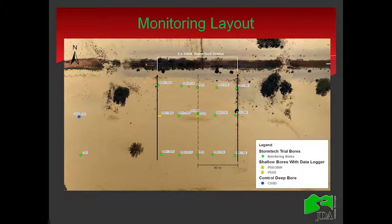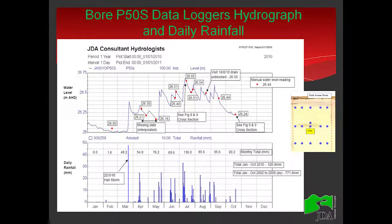I'm referring to the center line — it's important because we estimate that if the maximum mounding occurs, it will occur there. This is the observed data from the logger. My Modflow model starts in March and ends in October, because we are interested in the mounding dynamics in the wet period. In summertime, the perched water table will virtually vanish because there is no recharge — it will all drain. According to the data, we have a maximum mounding occurring in July 2010 of 26.65, so a mounding of 65 centimeters.